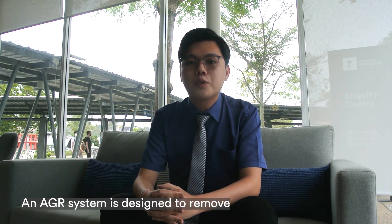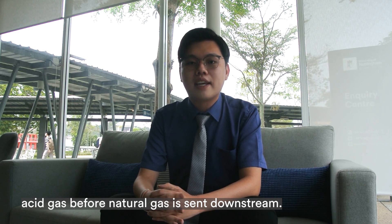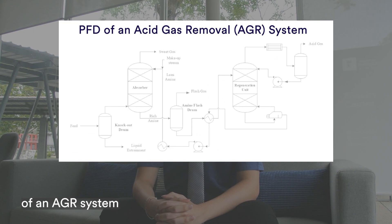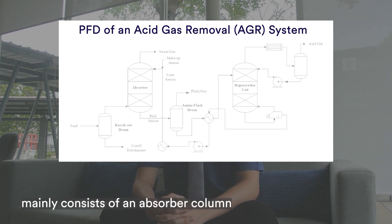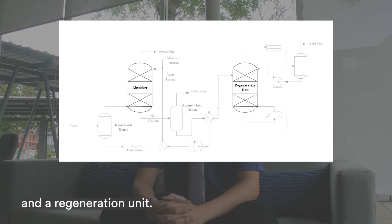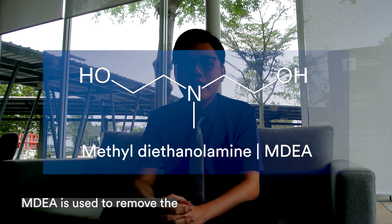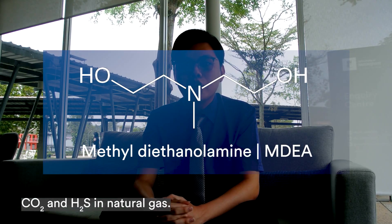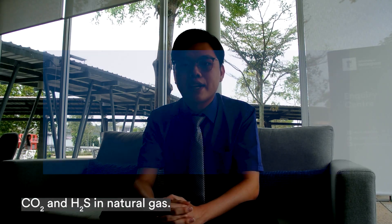An AGR system is designed to remove acid gas before the gas is sent downstream. A typical process flow diagram of an AGR system mainly consists of an absorber column and a regeneration unit. In this process, MDEA is used to remove the CO2 and H2S in natural gas.